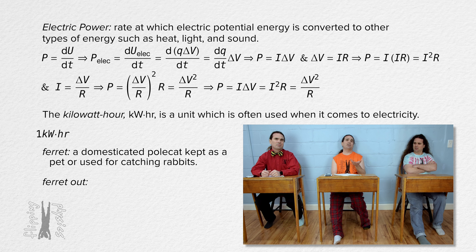A lightbulb is a common item used in physics. A lightbulb can be treated as a resistor which converts electric potential energy to light, heat, and sound energy. The brightness of a lightbulb increases with increasing power and decreases with decreasing power. Therefore, the brightness of a lightbulb is often used to demonstrate the power in electric circuits.